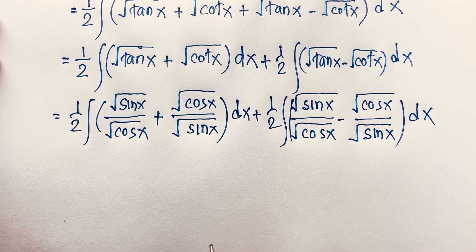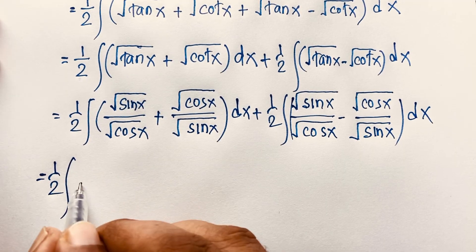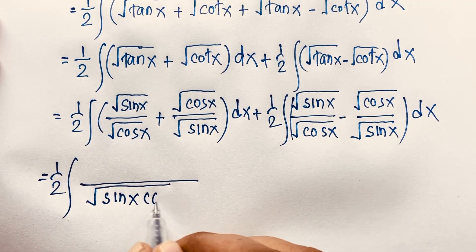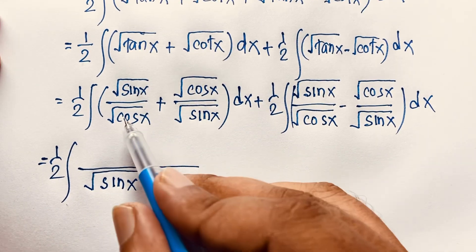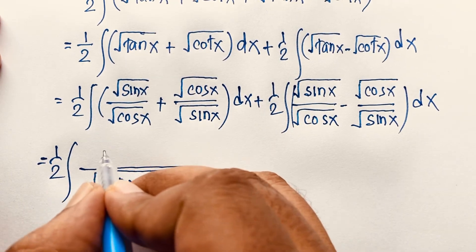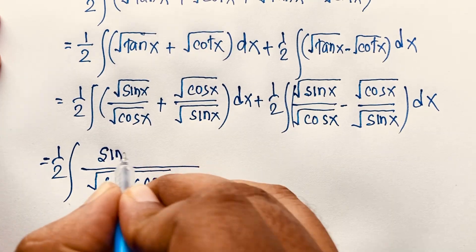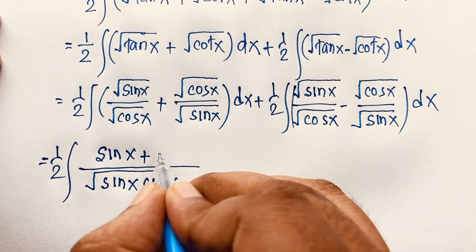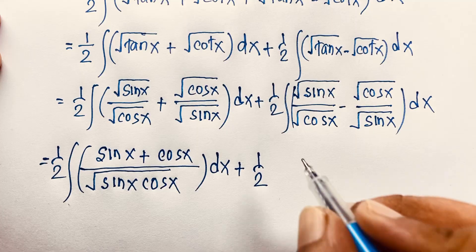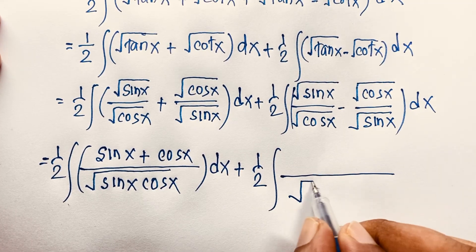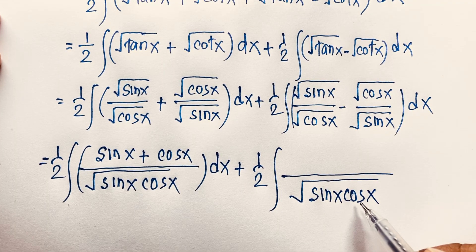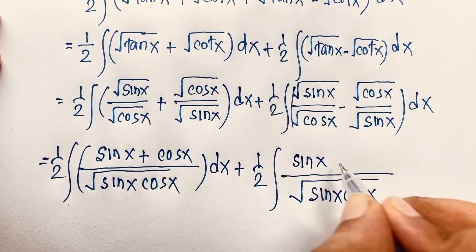Now I find a common denominator for each integral. The least common denominator is square root of (sin x · cos x). For the first integral, this gives (sin x + cos x) in the numerator over square root(sin x · cos x) dx. For the second integral, the numerator becomes (sin x − cos x) over square root(sin x · cos x) dx. We know that 2 sin x cos x = sin 2x.